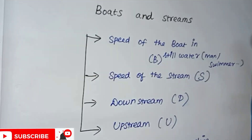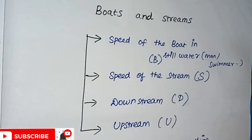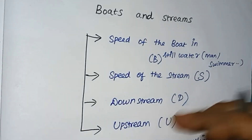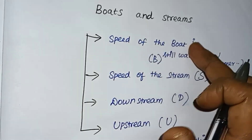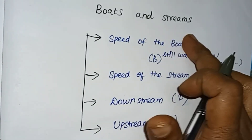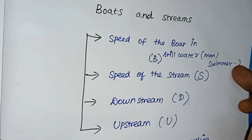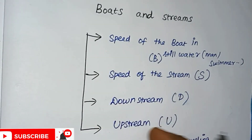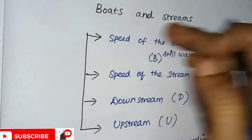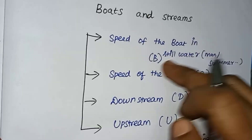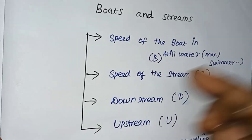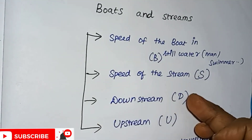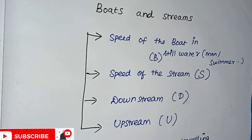Boats and Streams is an important basic concept. We define the following variables: Speed of the Boat in still water is B, speed of the Stream is S, Downstream speed is D, and Upstream speed is U.